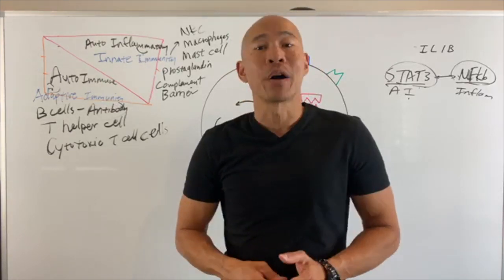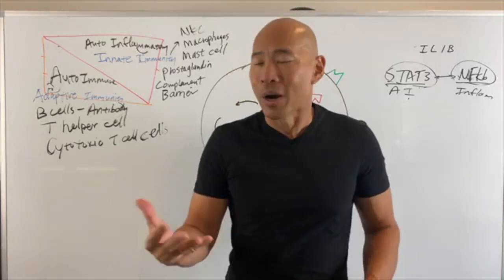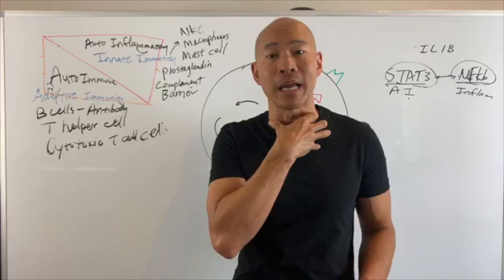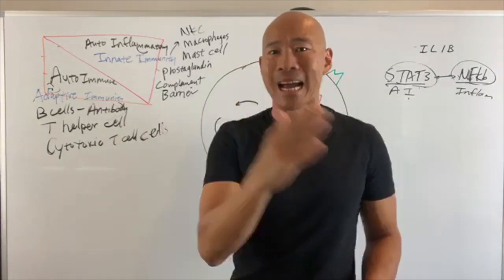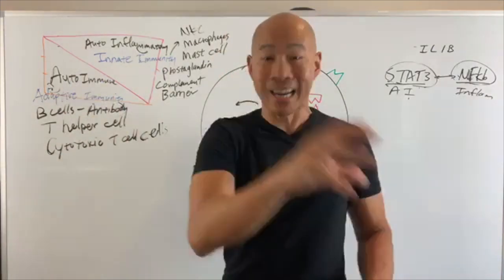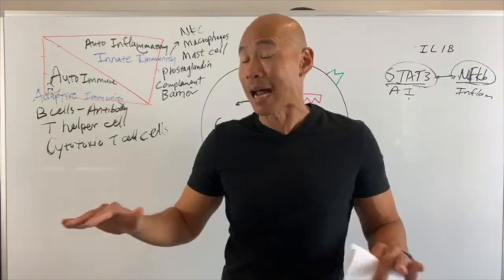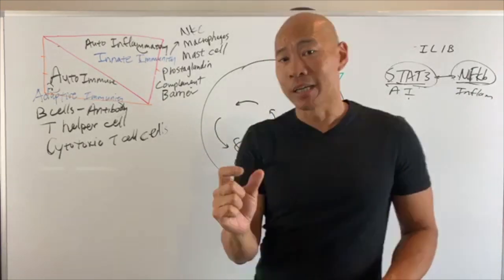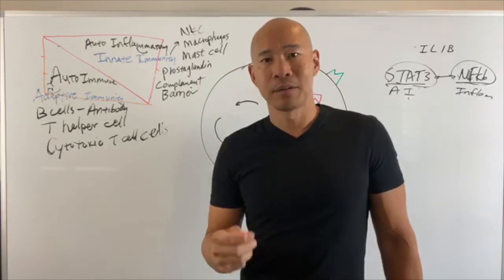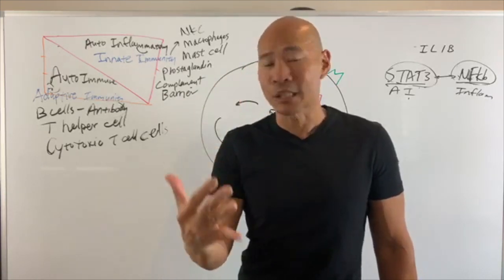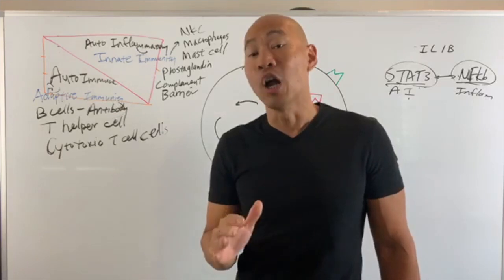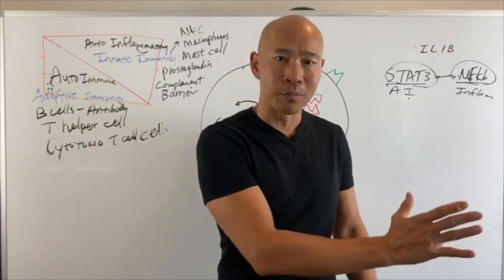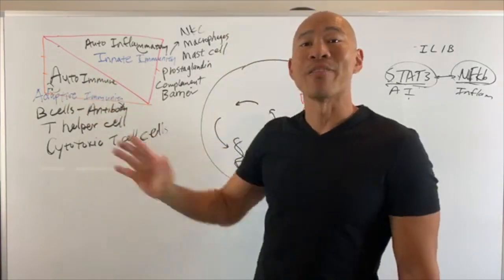A lot of people mistakenly address the wrong thing with autoimmune disease. For example, people with Hashimoto's are told it's a thyroid problem — it's not. Hashimoto's is an autoimmune disease where your immune system attacks your own thyroid gland. Taking thyroid hormone doesn't stop the immune system from attacking the thyroid. Lifestyle medicine — diet, nutrition, mindset, exercise, detoxification — should be the primary mode of care for thyroid disease. Thyroid hormone is an afterthought. You still need to address the autoimmune and inflammatory problem.